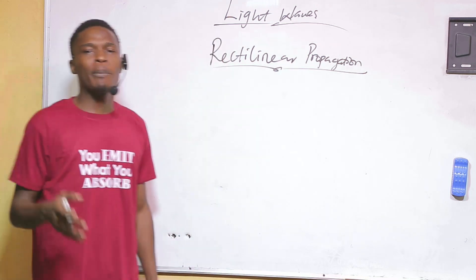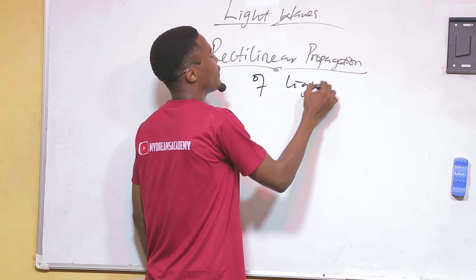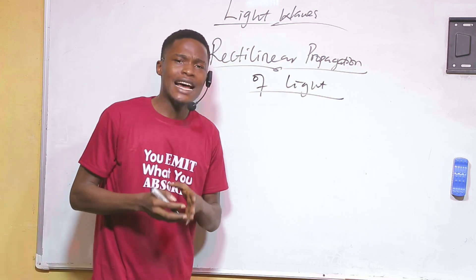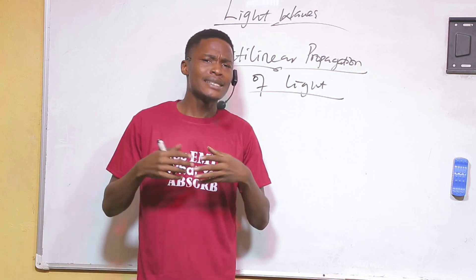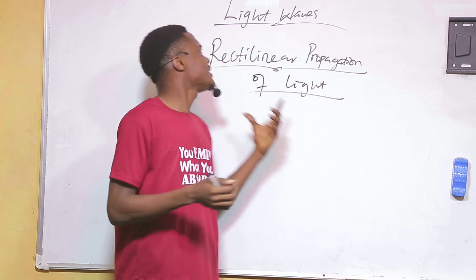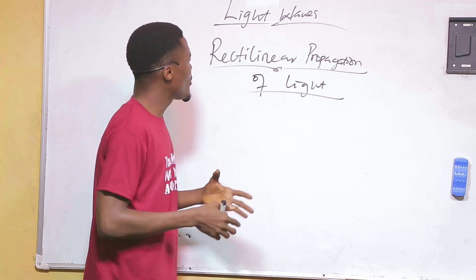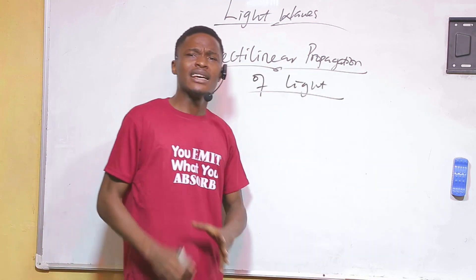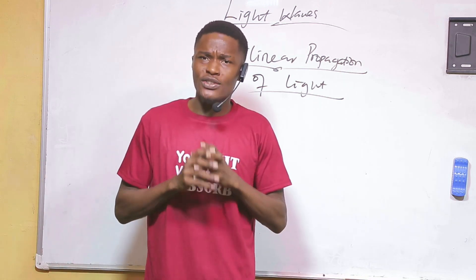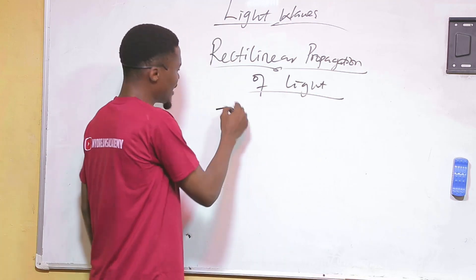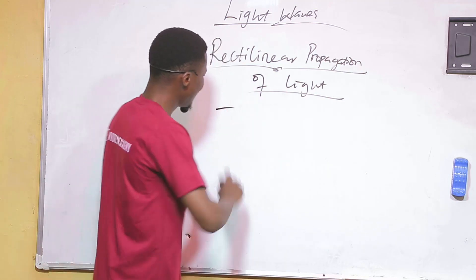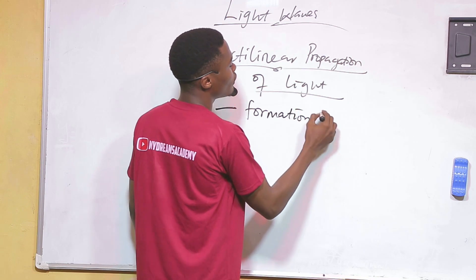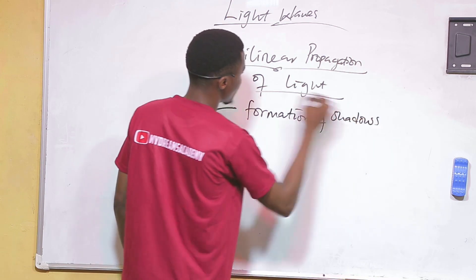We are going to talk about rectilinear propagation of light. Rectilinear propagation of light is a theory that supports the assumption that light travels in a straight line. Scientists came together, performed experiments, and agreed that light travels in a straight line. There are simple evidences to support this: formation of shadows, formation of eclipses, and image formation by pinhole camera.